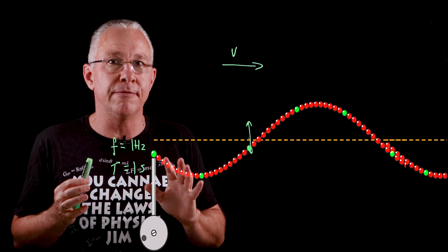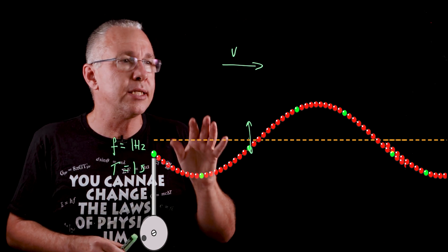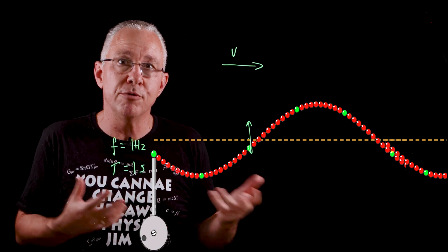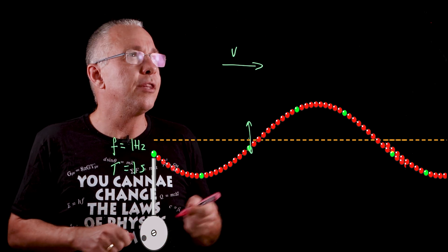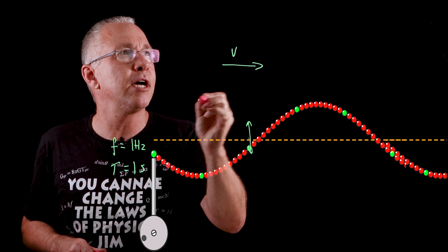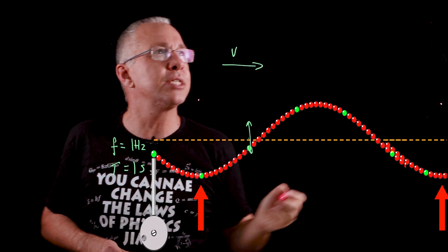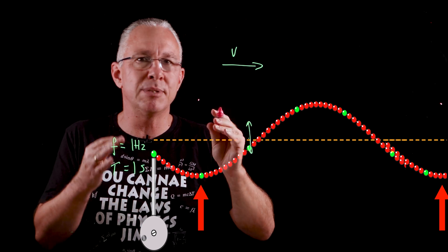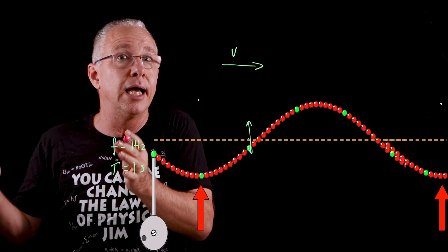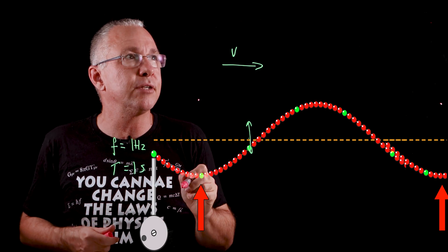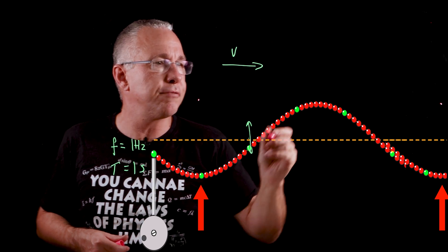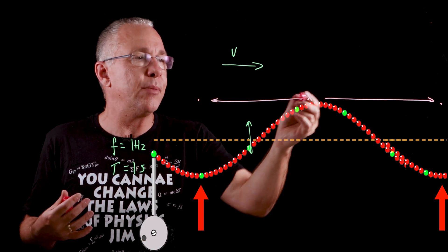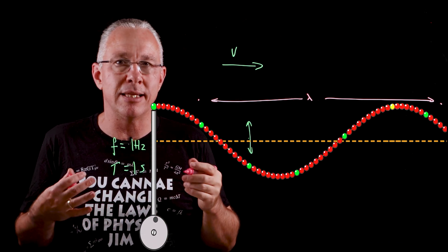When we pause the wave we see it stationary, which is just an image of the wave — waves aren't strictly stationary. This allows us to look at another important dimension: the wavelength. If you look at the distance between two points that are doing exactly the same thing — for example measured from trough to trough — that repeating section is called the wavelength, the length of the wave. We use the symbol lambda, a Greek letter, to represent that particular length.